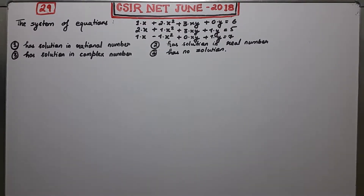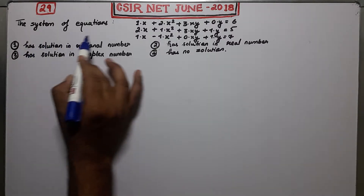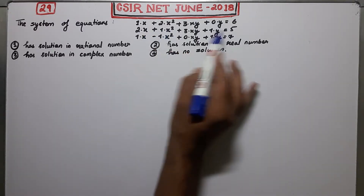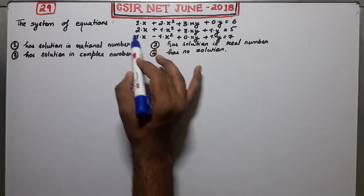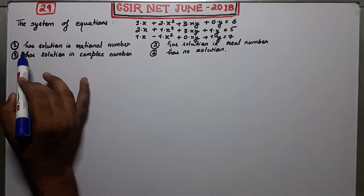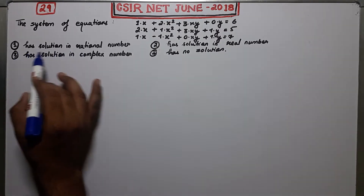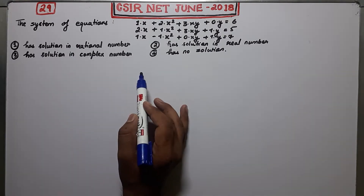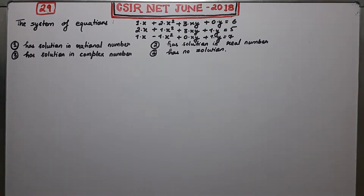Welcome guys, this is question number 29 of NET June 2018 — again a question of linear algebra. Let us firstly read it; it's a question from Part B. The system of equations involves x, 2x squared, and so on. The question is asking whether it has a solution in rational numbers, in real numbers, in complex numbers, or has no solution — these are the four options.